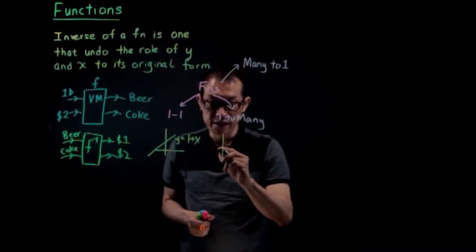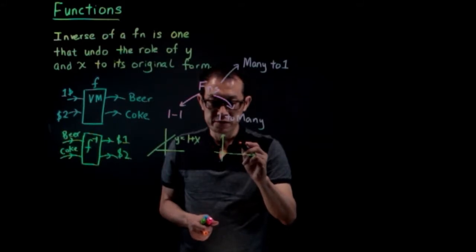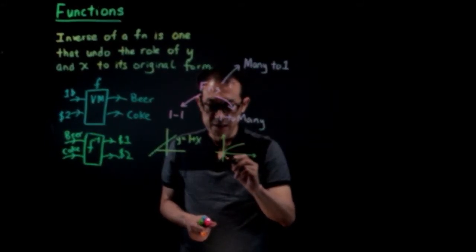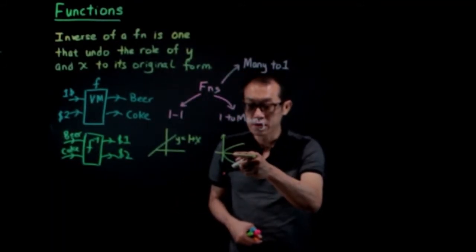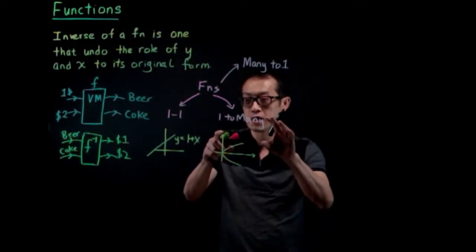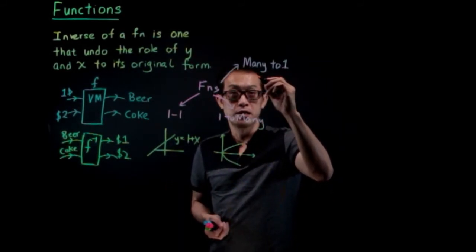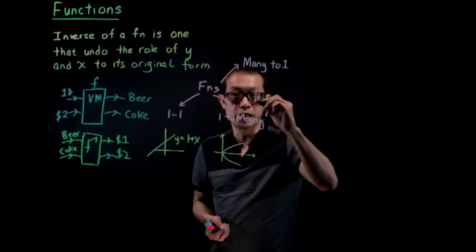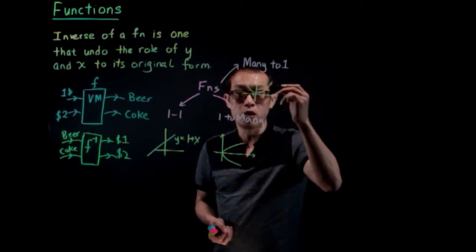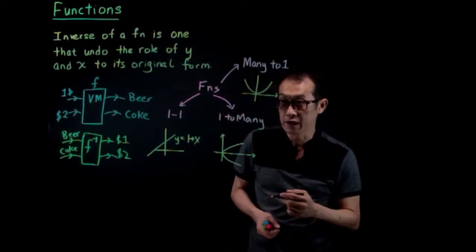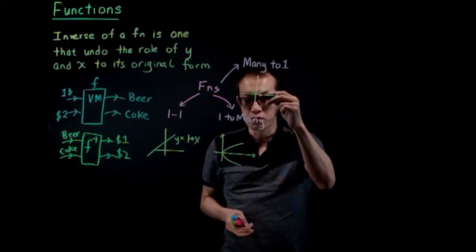A one-to-many function is rightfully not even a function, but I'll mention it here to explain. This is not a function — it has one input going to many outputs. A many-to-one function — an example is y equals x squared — has two inputs pointing to the same output.